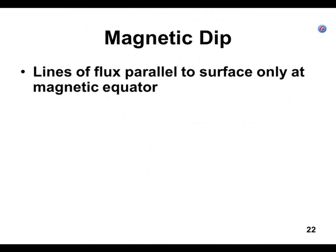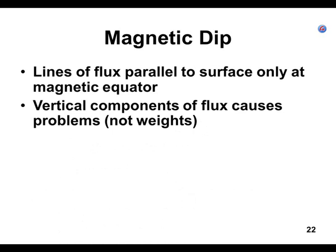Magnetic dip: the lines of flux of the Earth are only parallel to the Earth's surface at the equator. We're far away from the magnetic equator, so those lines of flux are trying to go down, which causes some significant errors. That's what we mean by a vertical component — the lines of flux tilt down towards the north.